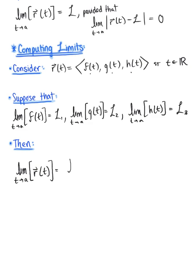We can think of this as the limit as t approaches a of that vector-valued function, so this is of f(t), g(t), h(t). Now we can separate this into three individual limits.